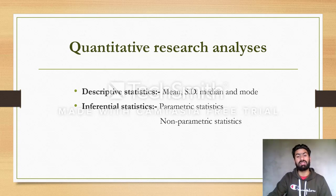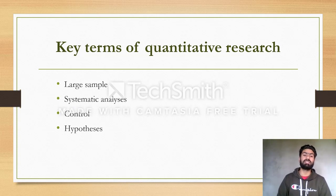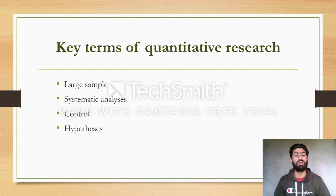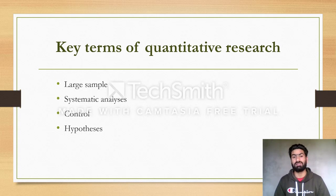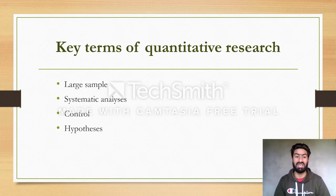Finally, let's look at some key terms of quantitative research. First, large sample — in quantitative research, the sample size is much larger than in qualitative research. Second, systematic analysis — quantitative research is defined as a systematic investigation of a phenomenon, making systematic analysis a very important concept.